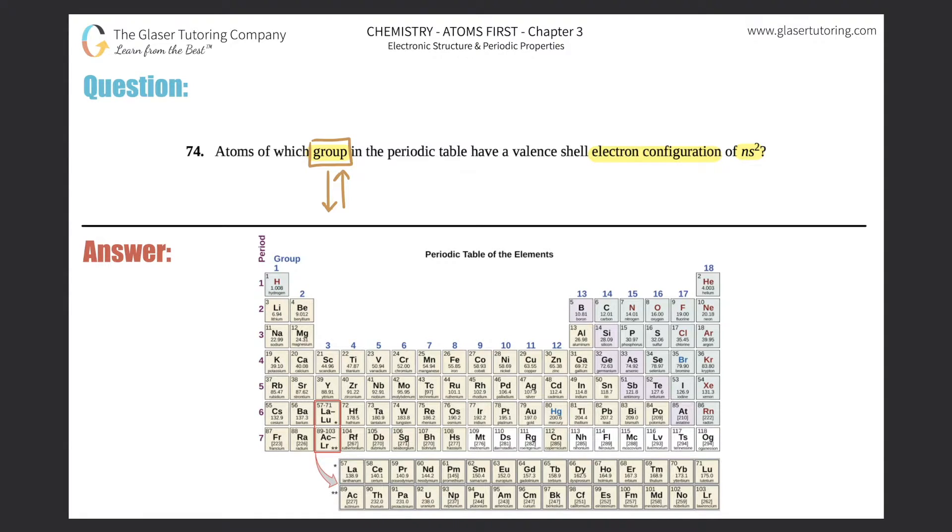We want to figure out which one has the valence shell electron configuration of ns2. Remember, valence shell means your outermost electrons - the electrons that are farthest away, the last shell from your nucleus. They're telling you specifically that they want you to end at ns2. It doesn't matter whether it's 1s2, 2s2, or 3s2.